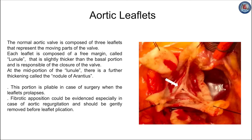The normal aortic valve is composed of three leaflets that represent the moving part of the valve. They have a wrinkly surface facing the aorta and a smoother surface facing the ventricle. Each leaflet is composed of three margins — the free margin is slightly thicker than the basal portion and participates in valve closure during diastole. The zone of apposition, the so-called lunule, is on the ventricular surface below the free margin, representing the place where each leaflet meets the adjacent leaflets during aortic valve closure.